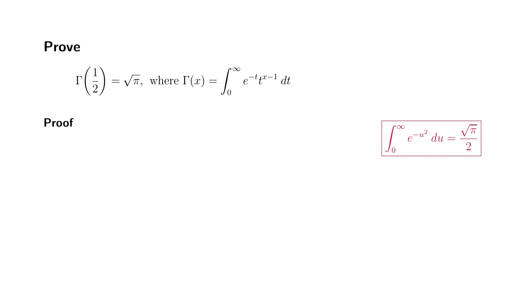Let's try to prove that the gamma of 1 half is equal to square root of pi. As we know, the gamma of x is defined as an improper integral from 0 to infinity, e to the negative t times t to the x minus 1 with respect to t.